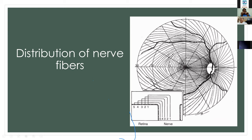The axon bundles in these arcuate areas form larger visible bundles near the optic disc due to lateral fusion, visible clinically as retinal striations — a clinically healthy sign. Fibers from the central retina traverse directly into the optic nerve head, constituting the papillomacular bundle, which goes into the temporal part. The arcuate fibers go into the superior temporal rim and inferior temporal area; the nasal fibers form the neural rim on the nasal side.